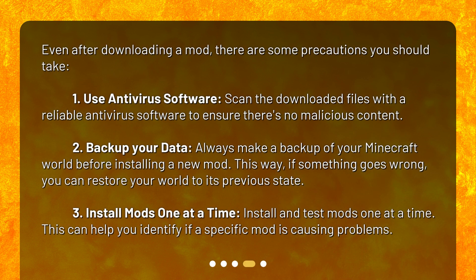What steps should I take after downloading a mod? Even after downloading a mod, there are some precautions you should take. Step 1: Use antivirus software. Scan the downloaded files with a reliable antivirus software to ensure there's no malicious content. Step 2: Backup your data. Always make a backup of your Minecraft world before installing a new mod. This way, if something goes wrong, you can restore your world to its previous state. Step 3: Install mods one at a time. Install and test mods one at a time — this can help you identify if a specific mod is causing problems.